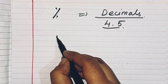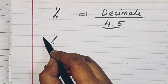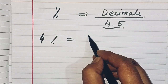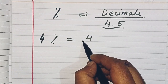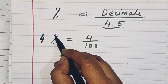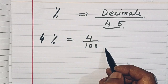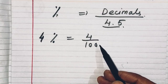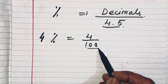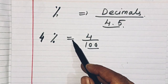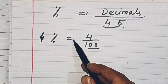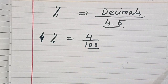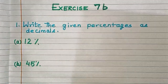So percentage is 4%. We convert 4% to 4 upon 100. We convert the percentage to the fraction, and the fraction becomes a decimal number. This is the whole process of how to solve this.